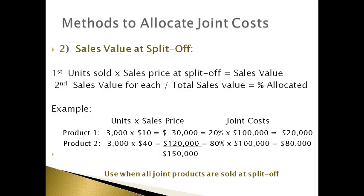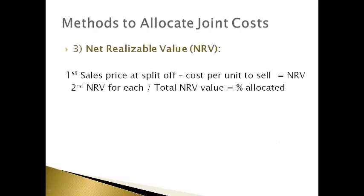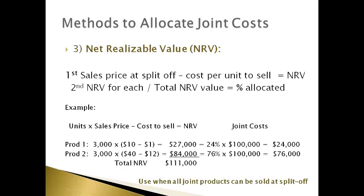This method is used when all joint products are sold at split-off. The third method is called the net realizable value method. Net realizable value is equal to the sales price at split-off less the cost per unit to sell products. The net realizable value is used to allocate the joint cost between products. A percent of the total net realizable value is multiplied by the total joint cost to get the amount allocated to each product. This method can only be used when all products can be sold at split-off without further processing.